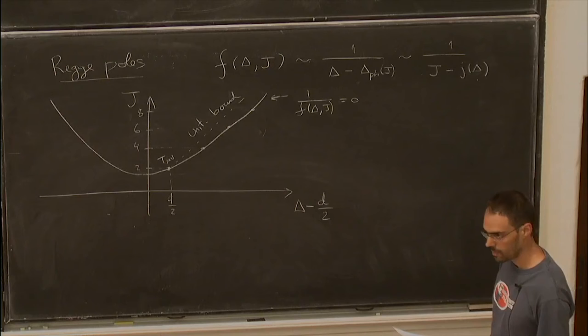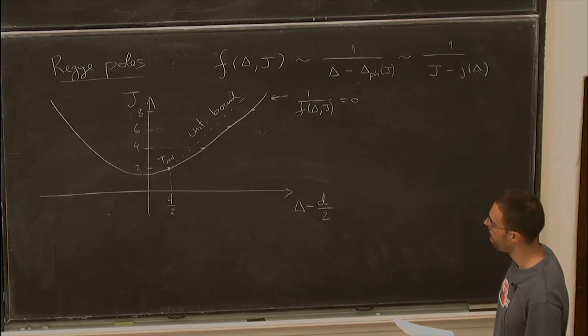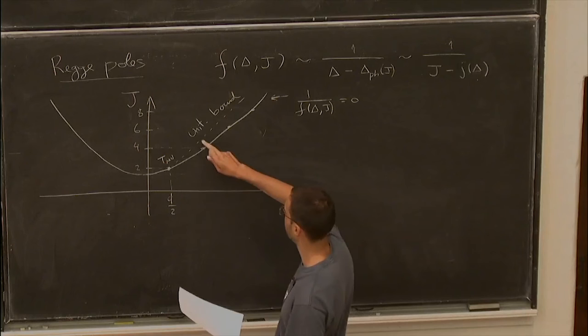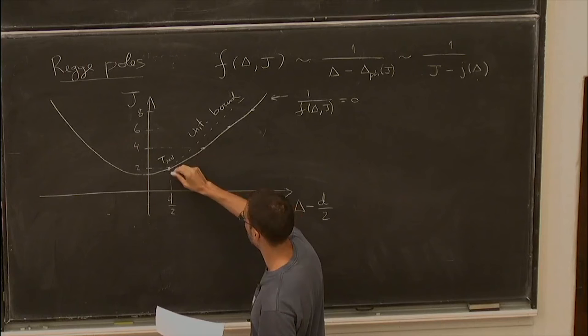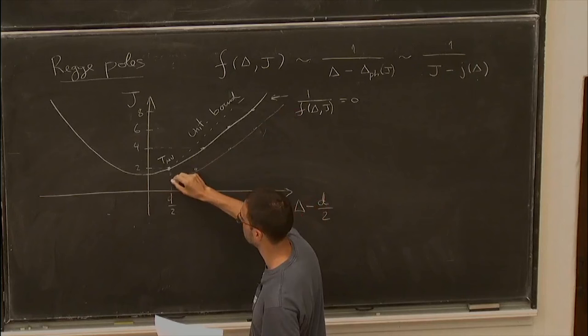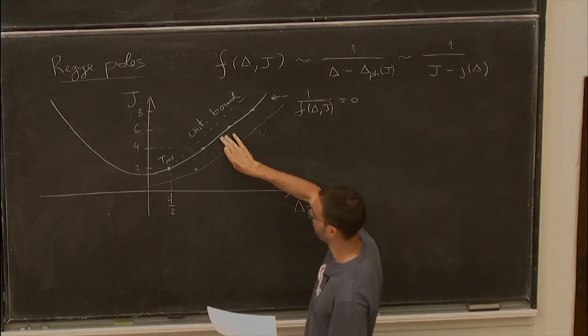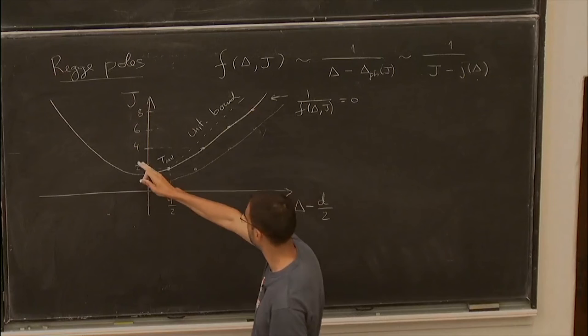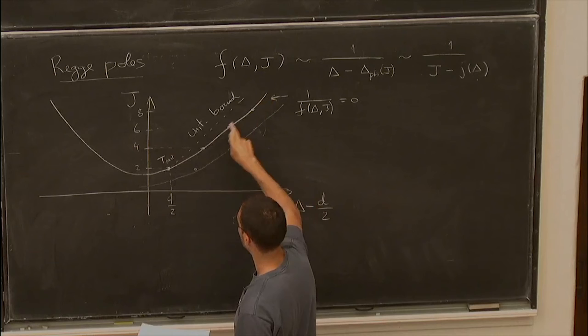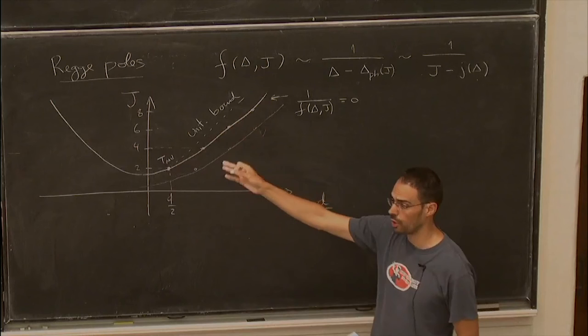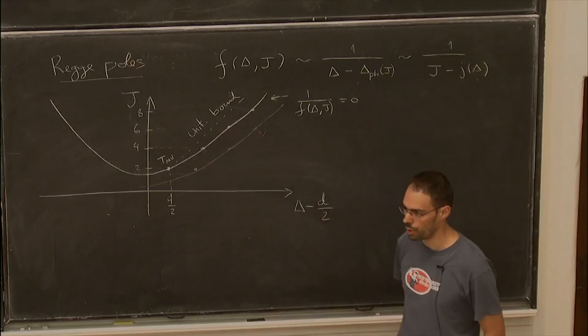How do we know that j(ν) for non-integer j satisfies the unitarity bounds? We don't in general — the curve could go below. But for the leading trajectory, we can use the Lorentzian inversion formula directly, because this is the first divergence of the integral. We can calculate for any complex spin, and we can actually show it's convex, even in between the integers, not just at integer spins. So we know it cannot dip below the unitarity bound.